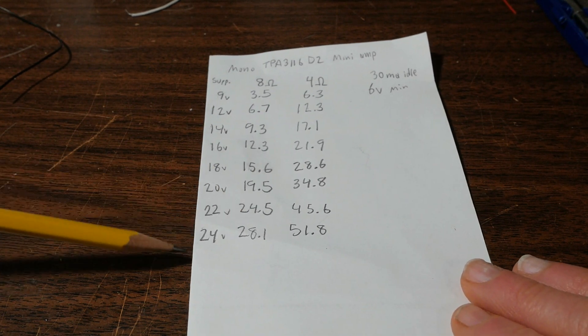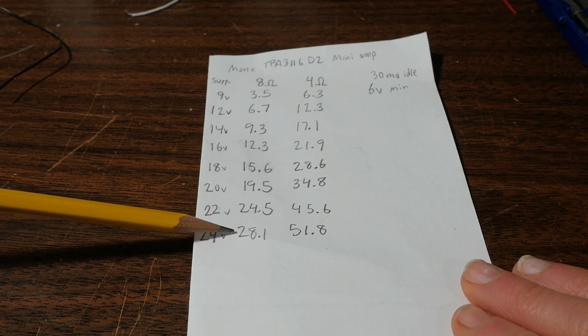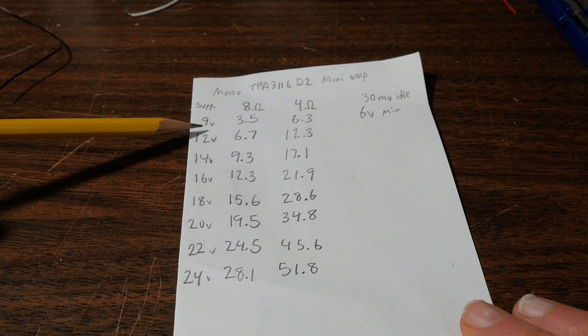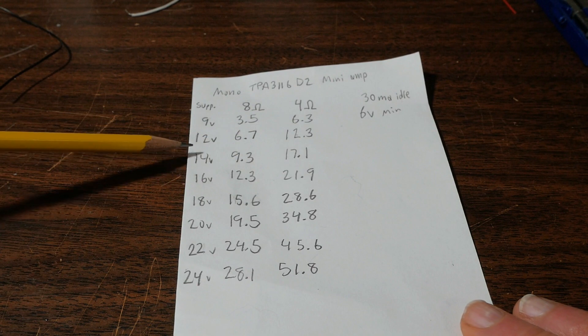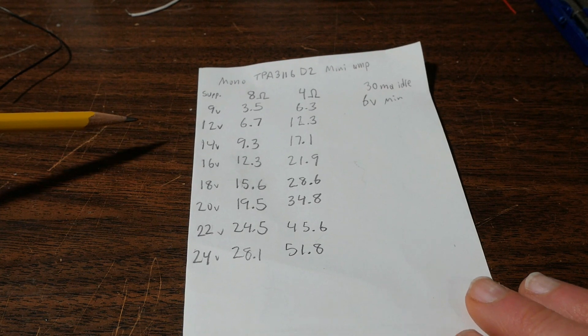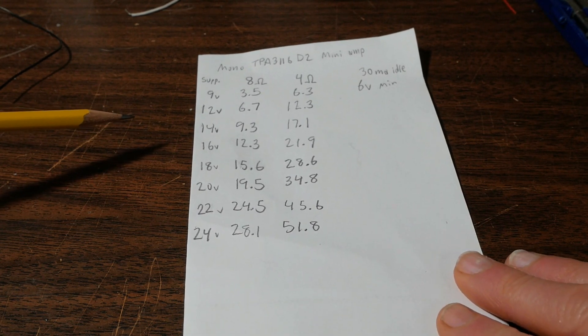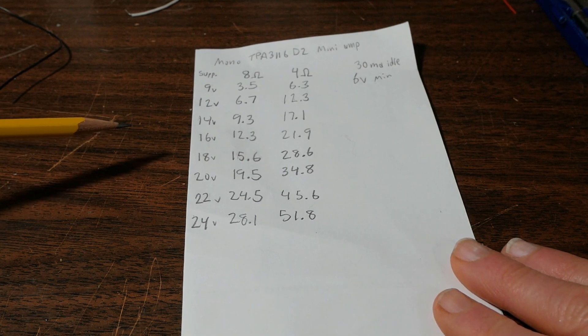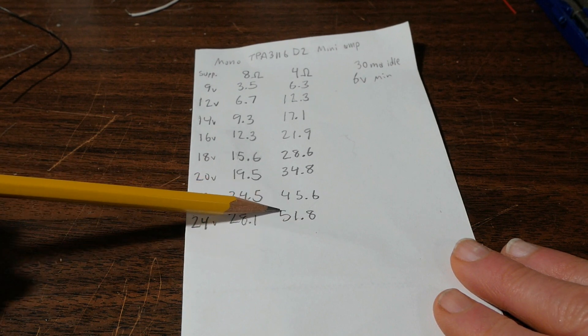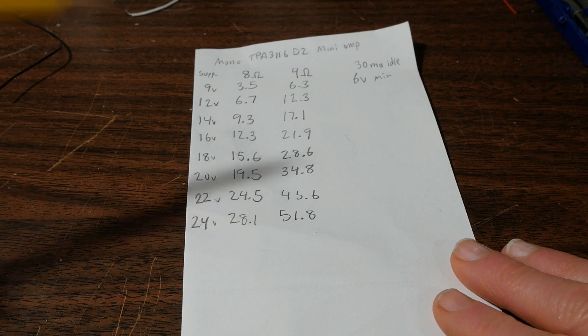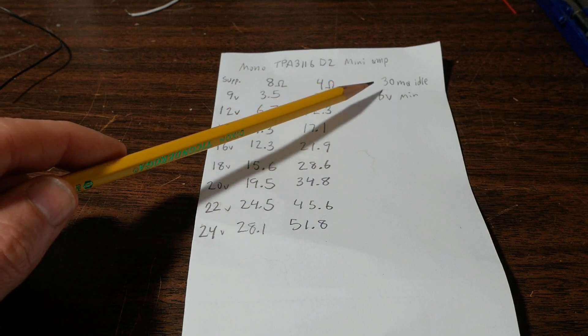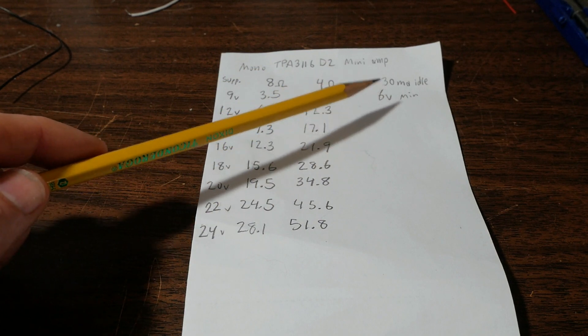For the 4 ohm loads: 9 volts it did 6.3. 12 volts: 12.3. 14: 17.1. 16: 21.9. 18: 28.6. 20: 34.8. 22: 45.6. And look at this, 24 volts 4 ohm loads, we got 51.8 watts. So we broke that 50 watt barrier. Like I mentioned before, idle current was 30 milliamps, which is very good for battery use.